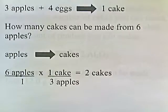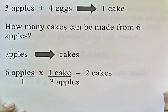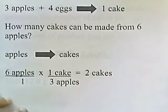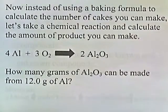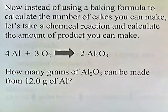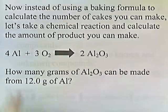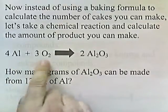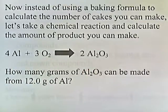That's the basic procedure we're going to use in stoichiometry to figure out how much of something we're trying to predict. Now instead of using a baking formula, let's take a chemical reaction and calculate the amount of product. Aluminum and oxygen forms aluminum oxide. How many grams of aluminum oxide can be made from 12 grams of aluminum?